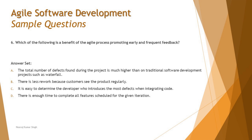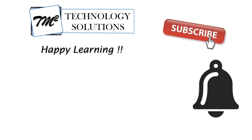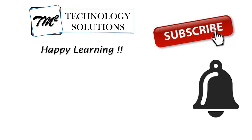So the right answer for question six is B — there is less rework because customers see the product regularly and guide the team with their required expectations and end goals. That's all from this tutorial. Feel free to comment below if you have any queries. Till then, keep learning, keep exploring, and happy learning.